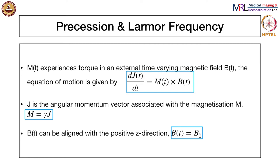What happens is that a torque is induced, and the torque depends on the static magnetic field. If you have studied high school physics, you have seen that if there is a current-carrying loop in a magnetic field, it experiences a torque. Similarly, the rate of change of angular momentum, which is dJ/dt, is basically the cross product of the magnetization and the applied static magnetic field: dJ/dt = M cross B.